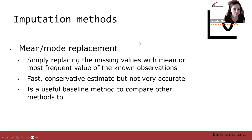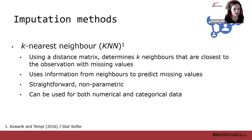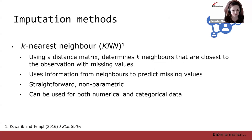Mean/mode replacement is fast — it's a conservative estimate and often not very accurate because it pulls all your values toward the middle, but it is a useful baseline method to compare other methods against. K-nearest neighbor imputation uses a distance matrix to determine the k nearest neighbors closest to the observation with missing values. You can select different values of k, and it uses information from those neighbors to fill in the missing values. It's fairly straightforward and non-parametric, so it doesn't assume any distributions for the data.